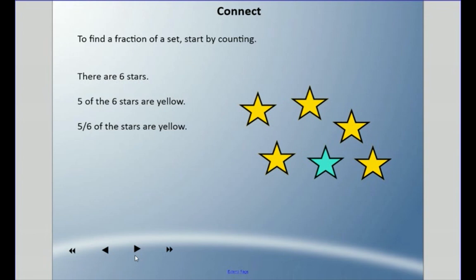I have a set number of stars here, and I can start by counting. I can see that there are six stars, and I could say five of the six stars are yellow. Five-sixths of the stars are yellow, so I could write a fraction for this set here: 5/6 are yellow.